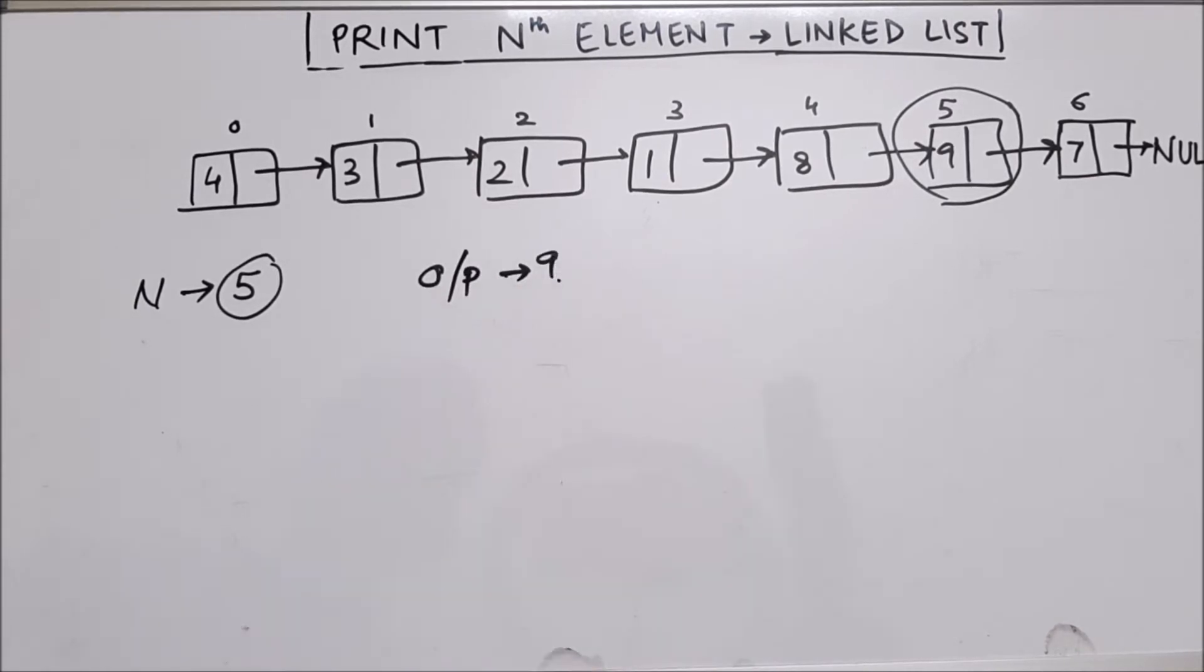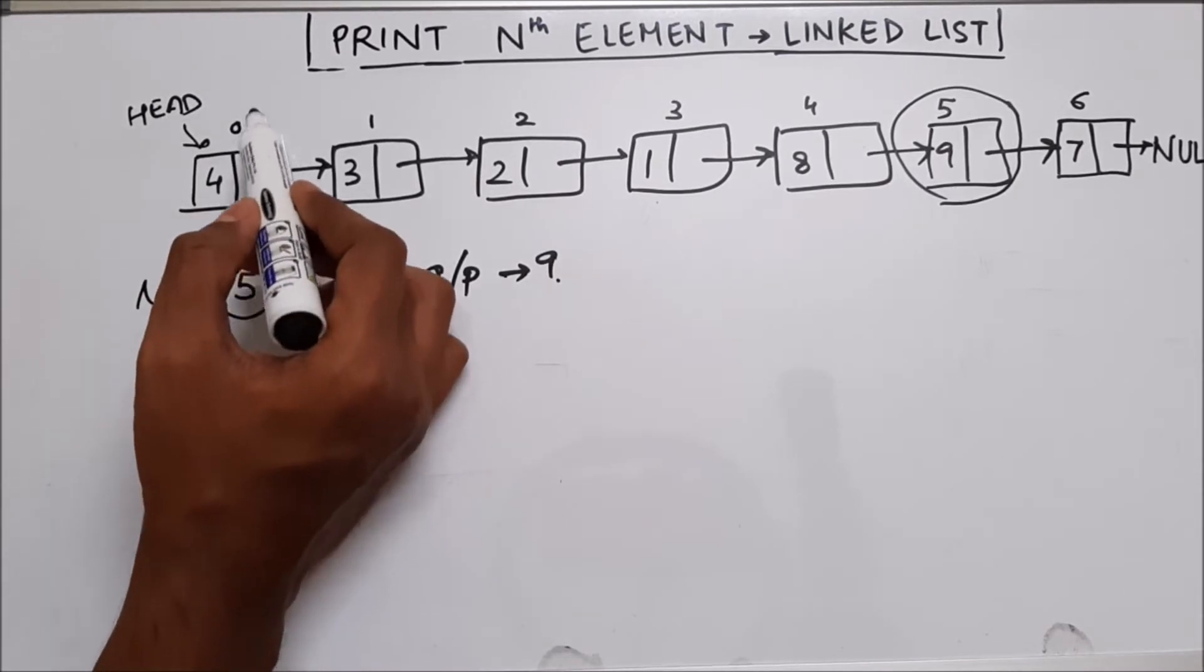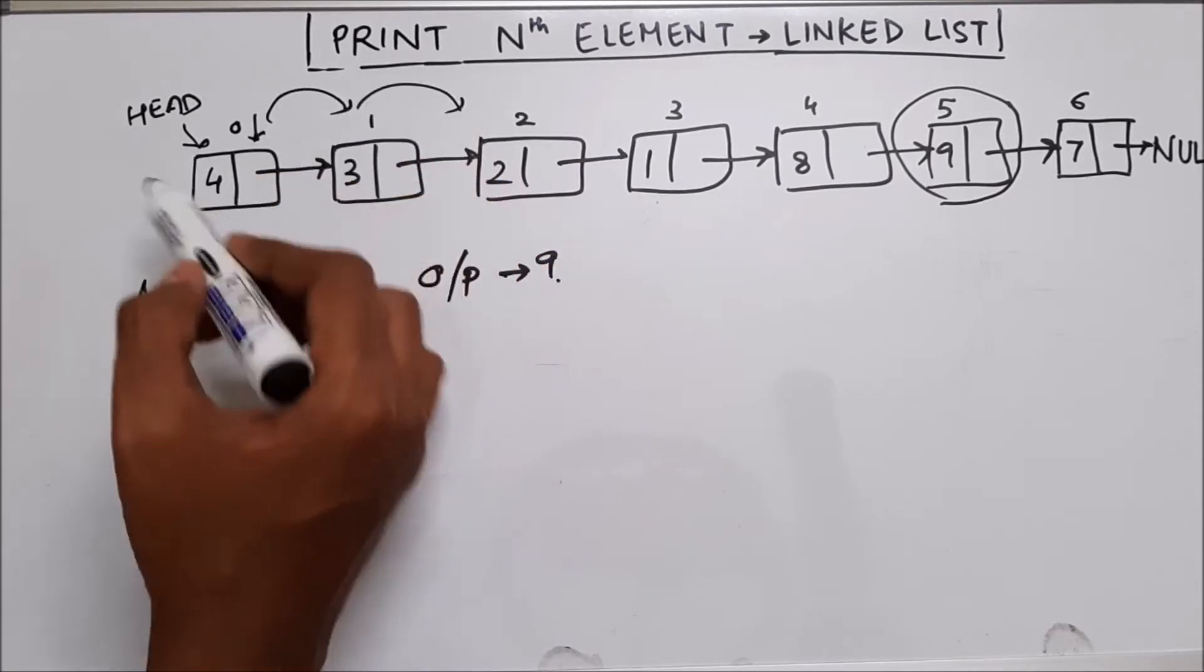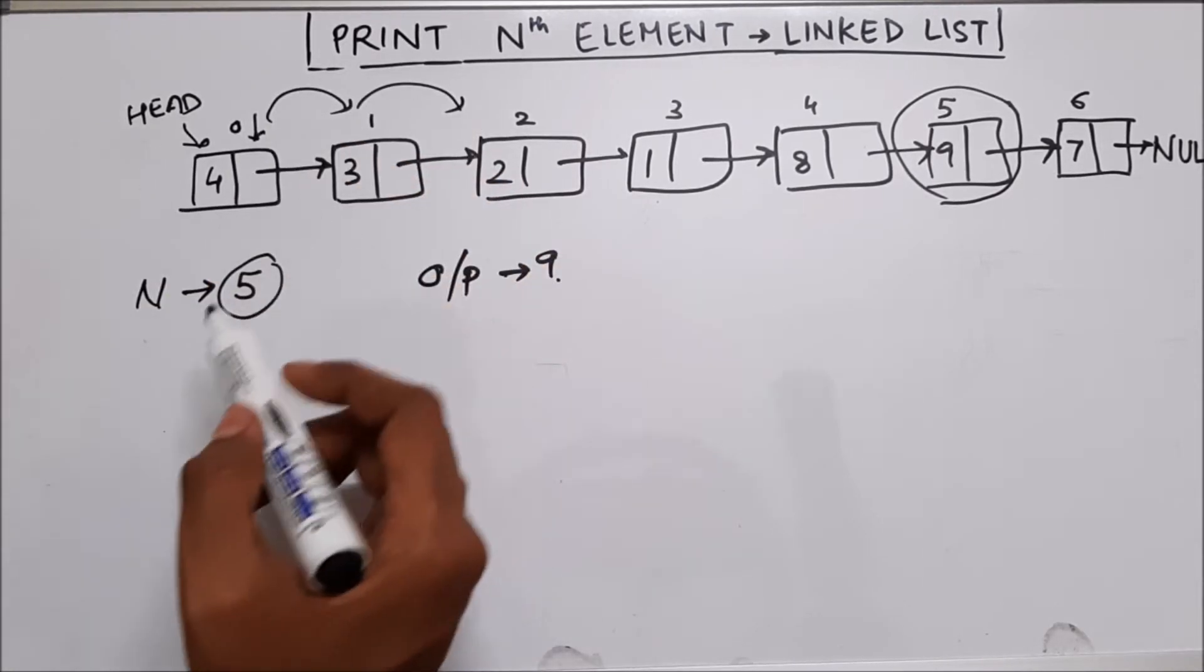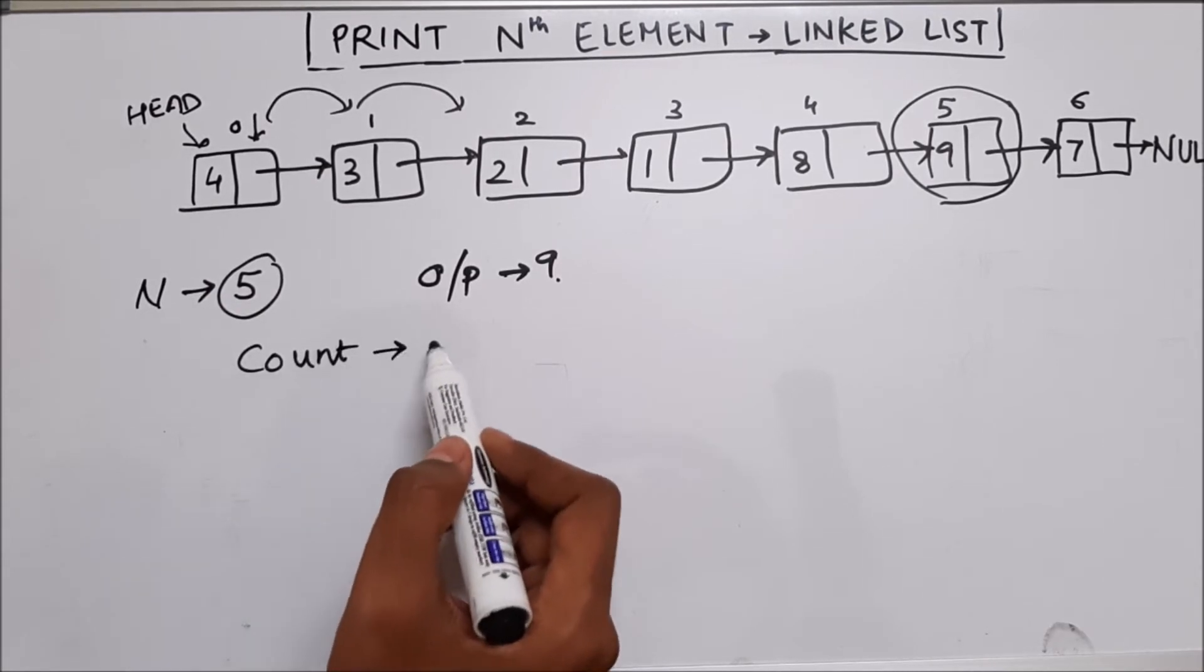So how do we do this? We will use one more pointer and we will start from head, we will start from head and we will keep on traversing. And every time we traverse, we will keep a count variable, which will be initially zero.